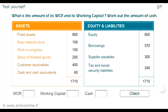Here is the simplified balance sheet of a business. Question: What is the amount of its WCR and its working capital? Work out the amount of cash. WCR is equal to the difference between current uses of funds and current sources of funds. It is equal to the various types of stock, plus customer receivable, minus supply payables, giving 450 of stock, plus 400, minus 300.